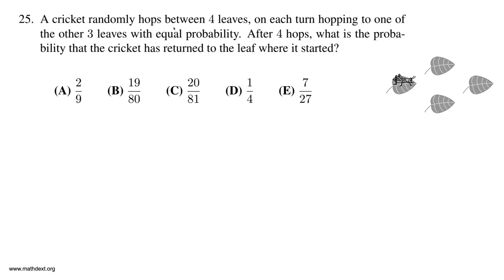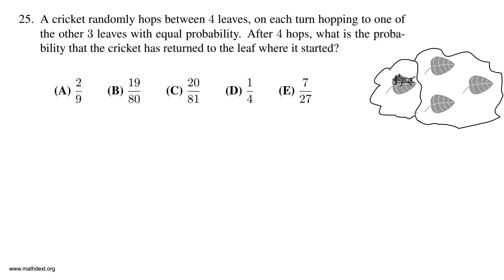So what you can do in this problem is think about it like this. At any given point in time, this cricket is either on the leaf where it started or not on the leaf where it started. We can group this into two separate states — possible states at any given point in time. We're going to call this state A and state B. State A is the cricket is on the leaf where it started, and state B is the cricket is not.